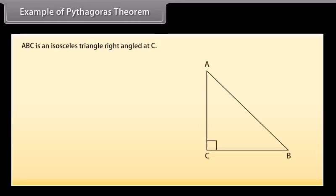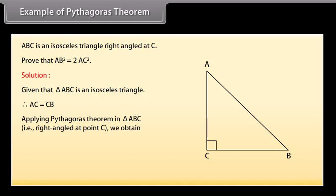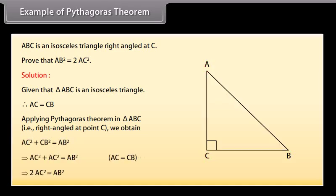Example: ABC is an isosceles triangle right angled at C. Prove that AB² = 2AC². Solution: Given that triangle ABC is isosceles, therefore AC = CB. Applying the Pythagoras theorem in triangle ABC right angled at C, we obtain AC² + CB² = AB², which implies 2AC² = AB².